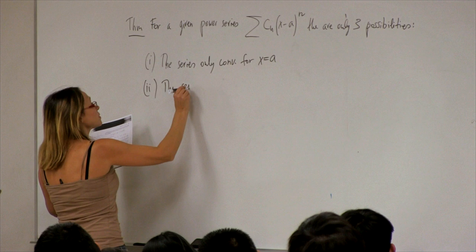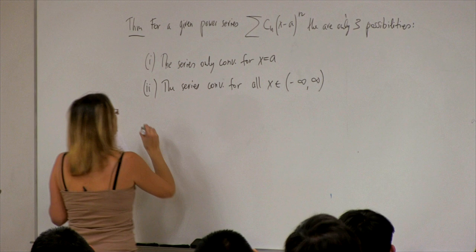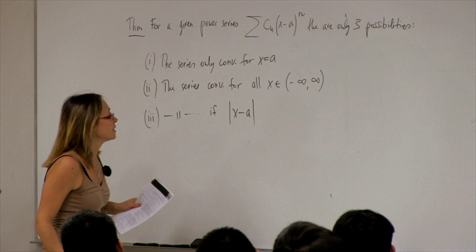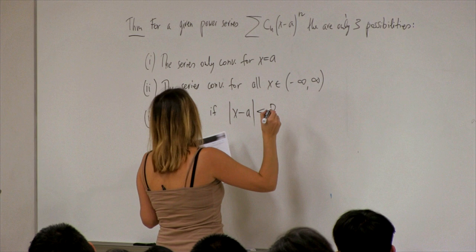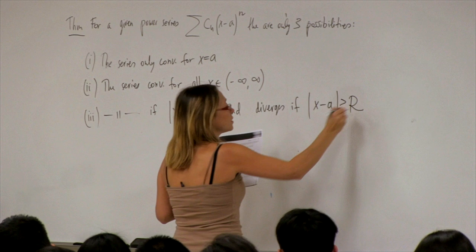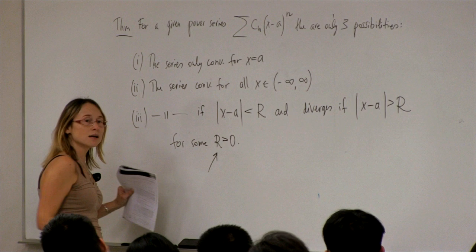Or the series converges for all x. Or — the third case — the series converges if the distance between x and a is less than r, and diverges if the distance between x and the center is greater than r, for some positive number r. This value r is called the radius of convergence.